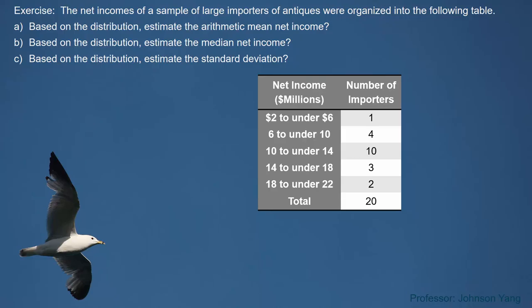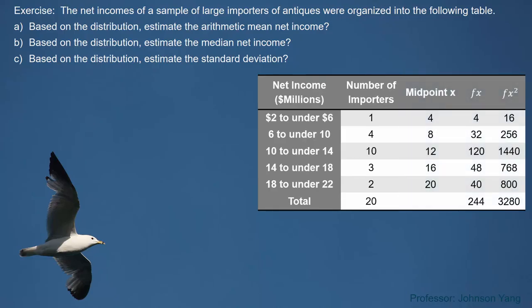We expand this table with more columns: midpoint, frequency multiplied by midpoint, and frequency multiplied by midpoint squared. For each class, we can find the midpoint, which is the value located in the middle of that class. The midpoint is calculated as (lower limit + upper limit) / 2. For example, for the first class, 2 plus 6 equals 8, divided by 2 gives 4 — so 4 is the midpoint of the first class.